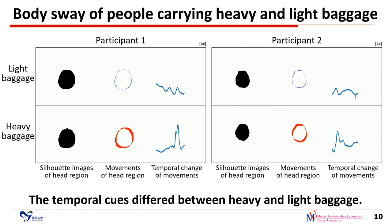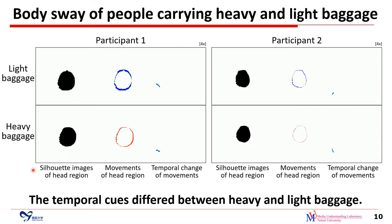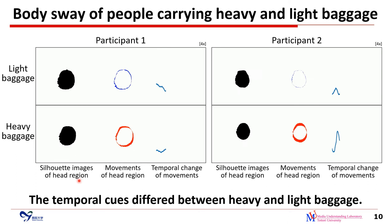These videos show examples of body sway measured by our method. The left side shows participant 1 and the right side shows participant 2. The right column shows temporal changes of movements. We see that the temporal cue differed between heavy and light baggage.